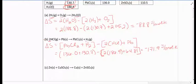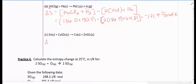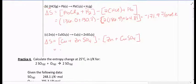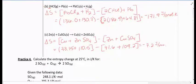And then finally, our last delta S is going to be equal to the S of copper plus zinc sulfate minus zinc plus copper sulfate. So we'll use the table, look up those values, and we get a negative 7.2 joules per mole kelvin.